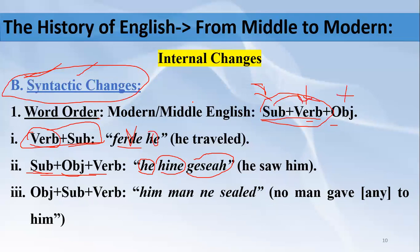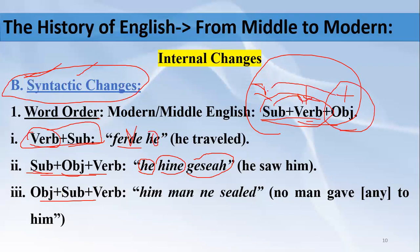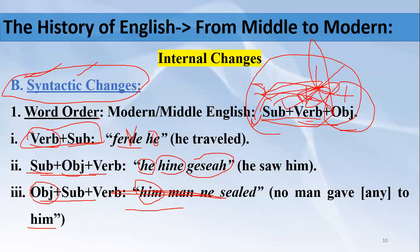When the Middle English period started, certain changes took place. Another structure that existed in Old English was Object-Subject-Verb — the sentence could start with the object. For example: 'him ne sealed nan man' meaning 'to him no man gave'. Here 'him' is the object at the beginning of the sentence. But when the Middle English period started, this structure disappeared and people started using the Subject-Verb-Object structure.